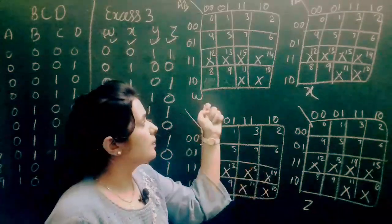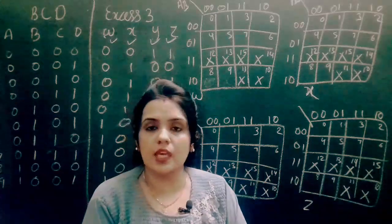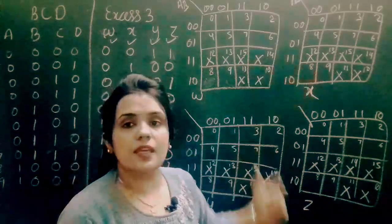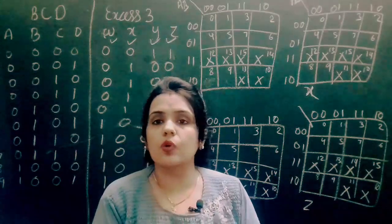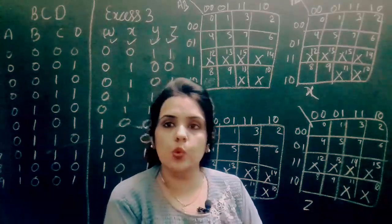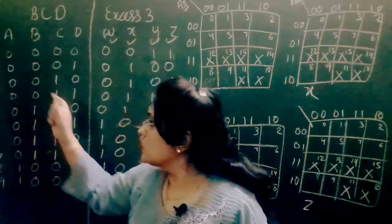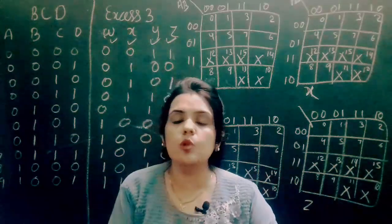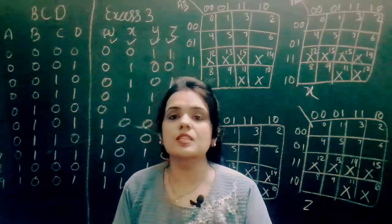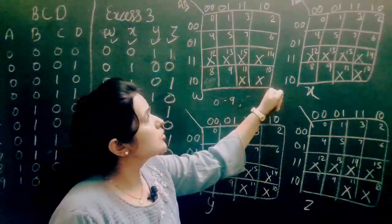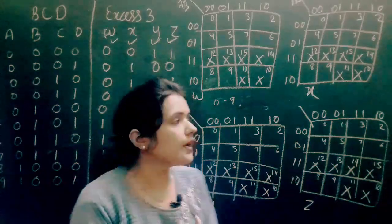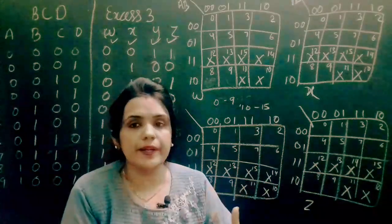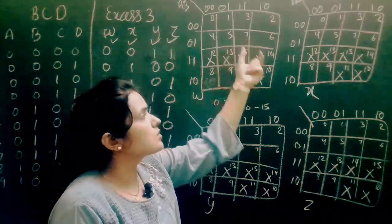These are the four K-maps for the four outputs W, X, Y, and Z. Now, what does X represent in these K-maps? X represents don't care. As you all know in K-maps, X represents the don't care condition. In BCD, only decimal digits from 0 to 9 can be represented in 4-bit form. But when we take four inputs, there are 16 possible combinations, so in the four-variable K-map there are 16 blocks total. However, only inputs 0 to 9 are valid; inputs 10 to 15 should be ignored. That's why those blocks are marked with X — don't care.